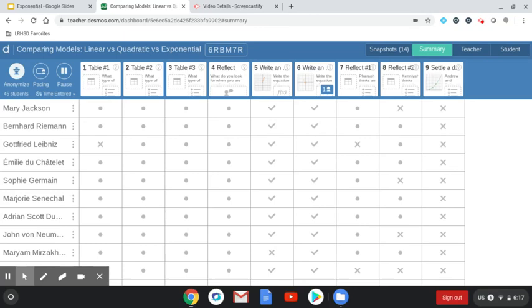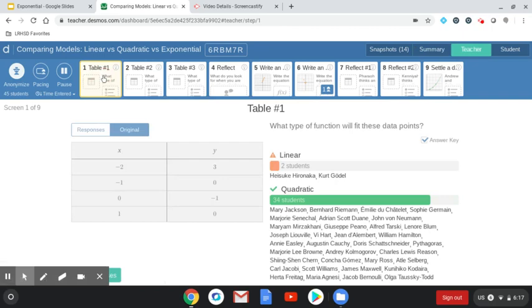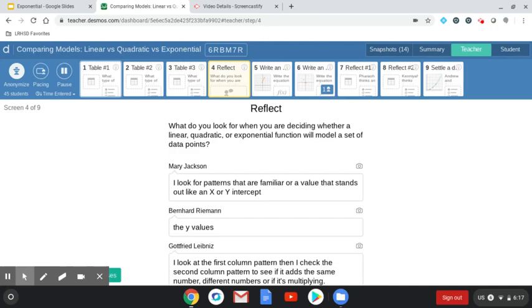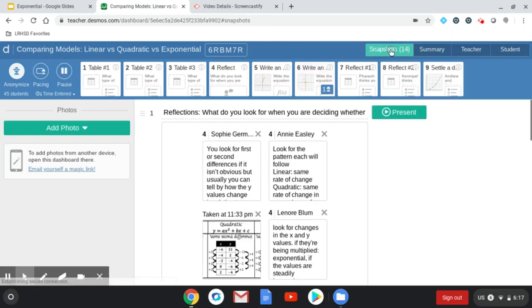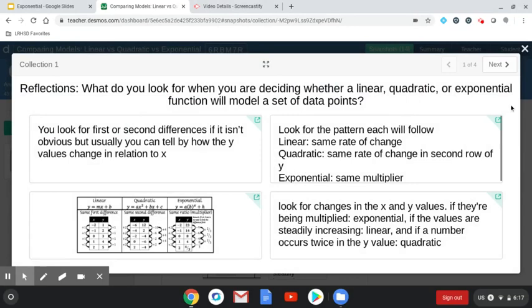So this is our Desmos assignment from last week. I already did click anonymize, so it turned all of your names into famous mathematicians. And it's kind of cool that I can go through each one and see which students got it right or wrong. I can also look at your reflections. And then I can also snapshot a couple of these, kind of like a favorite, and it'll group them for me together in this snapshots folder. So I put a few of them together.